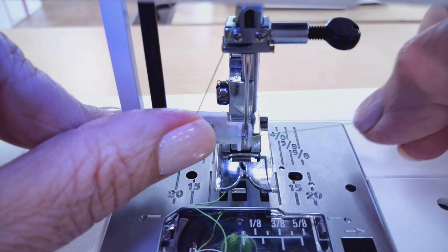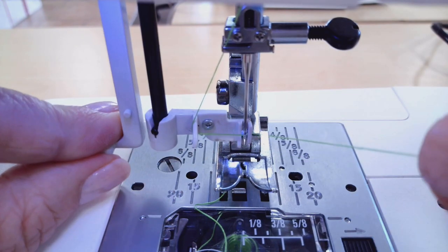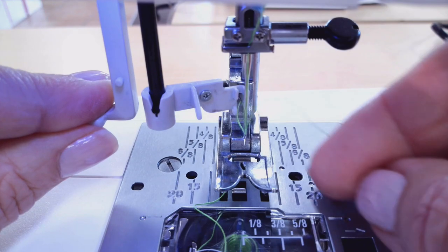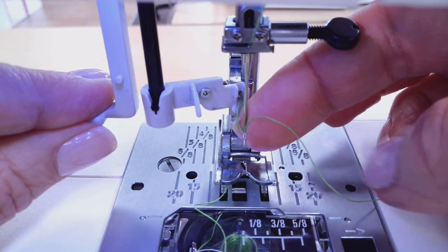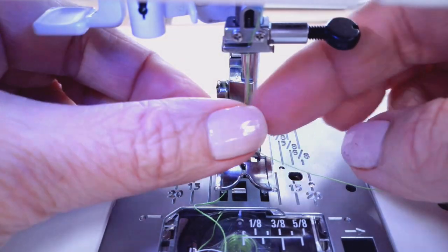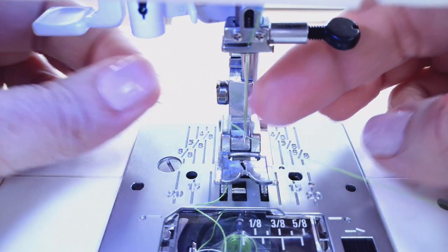So we scoop our thread up underneath the hook and then it pulls that thread through for us and you can see there the little loop and then we can pull our loop through.